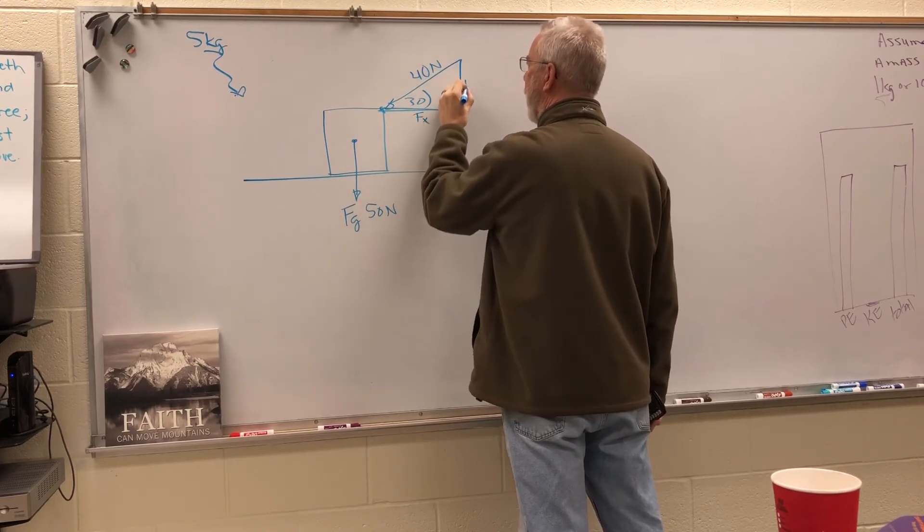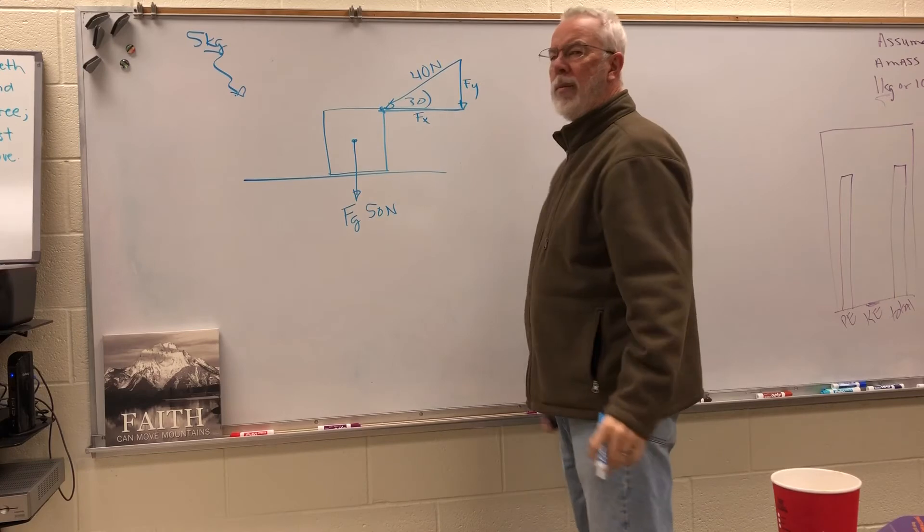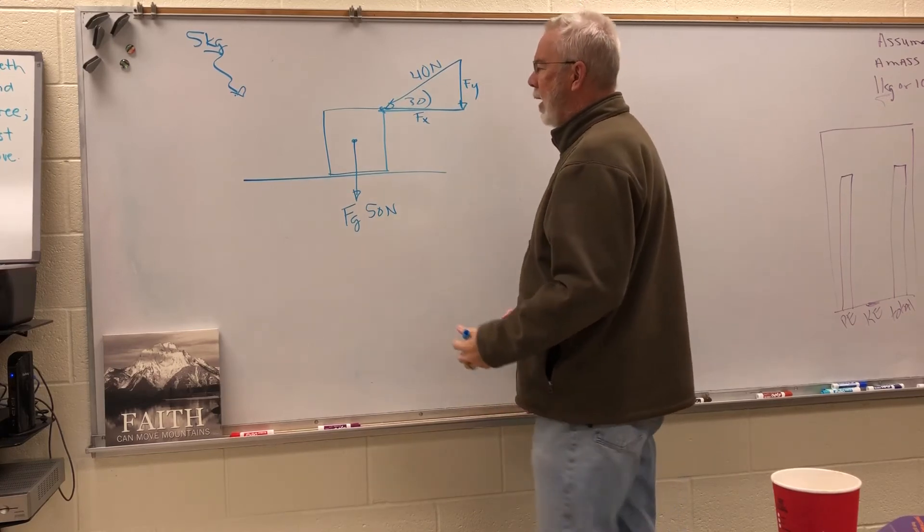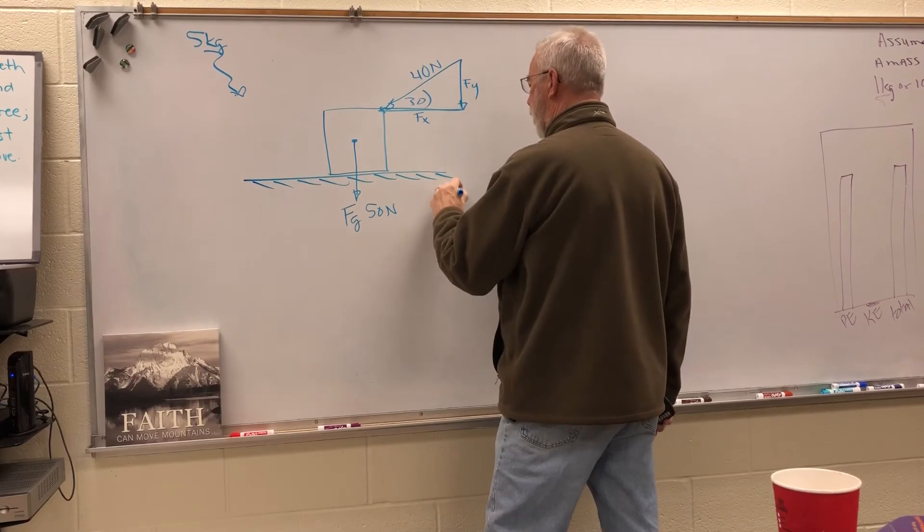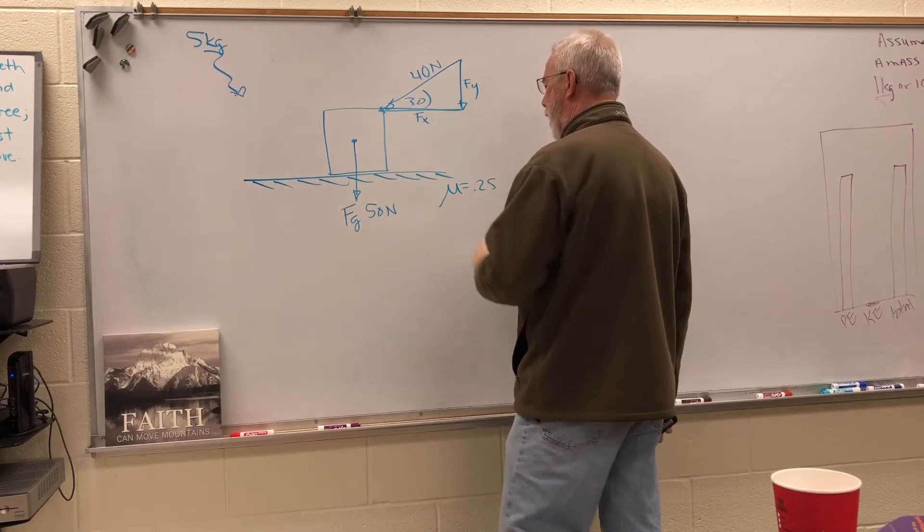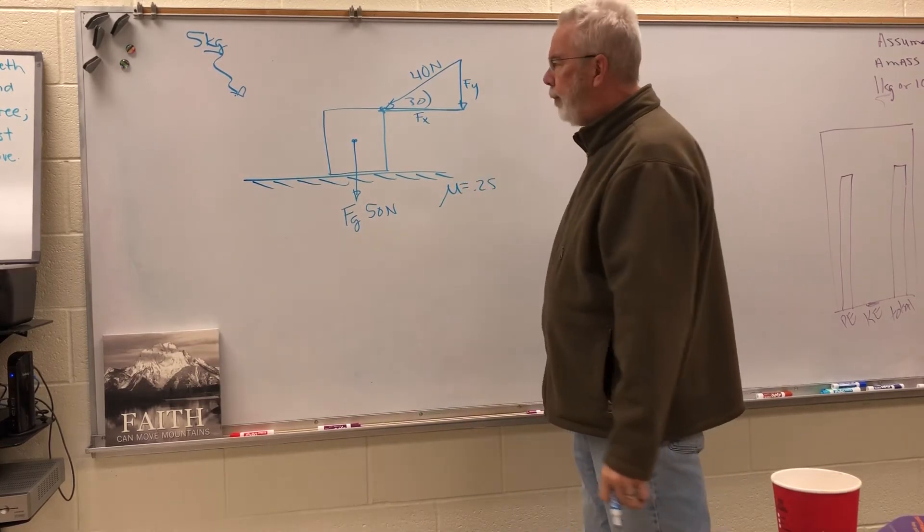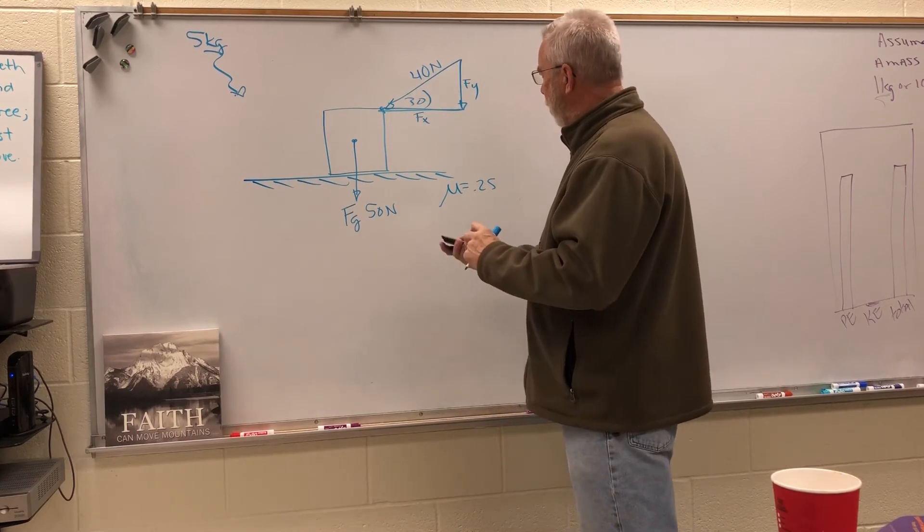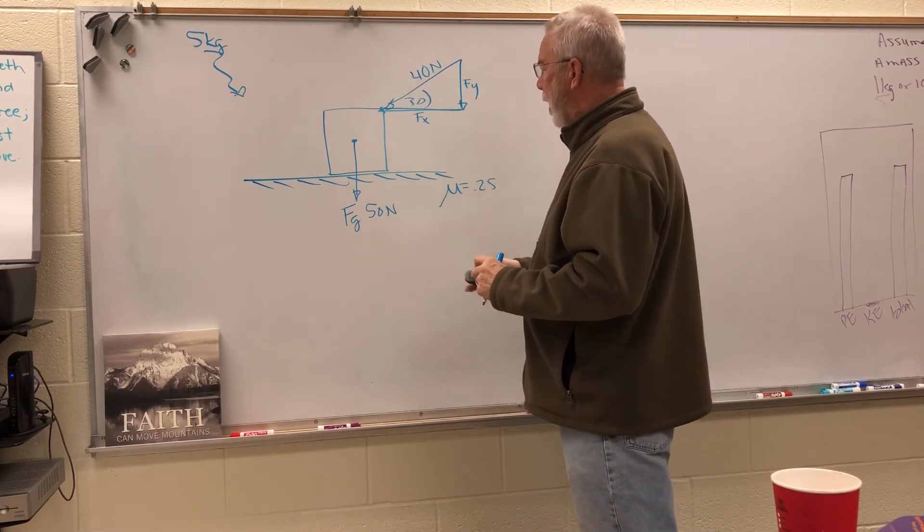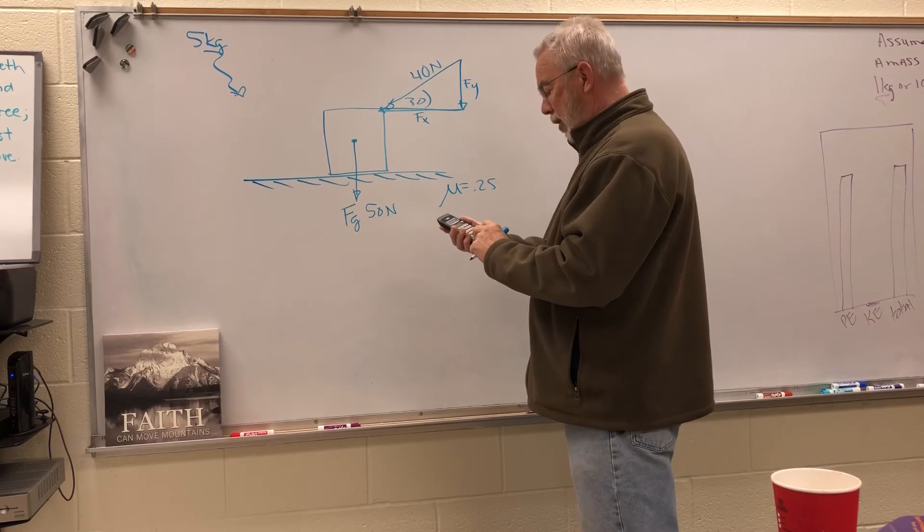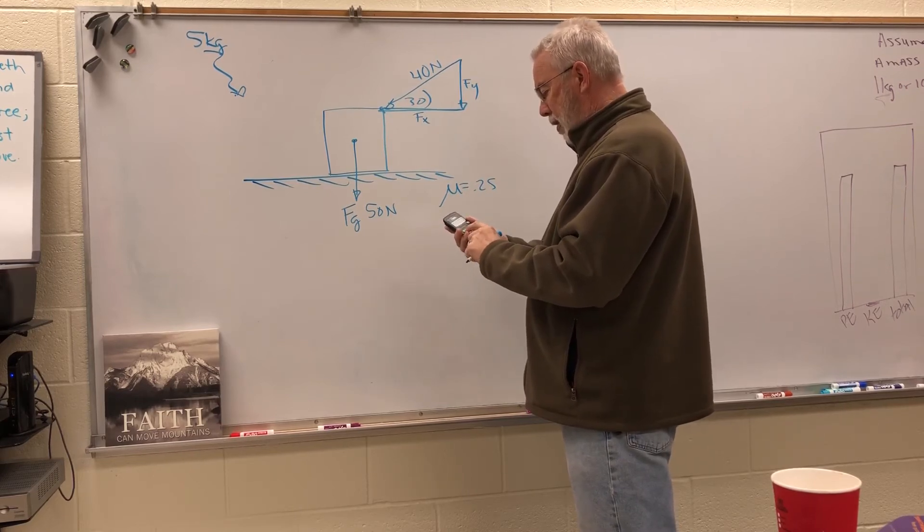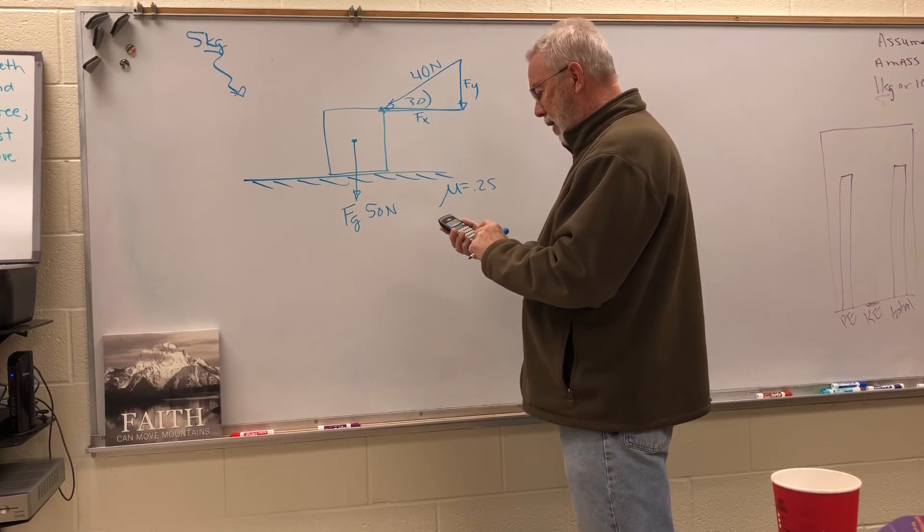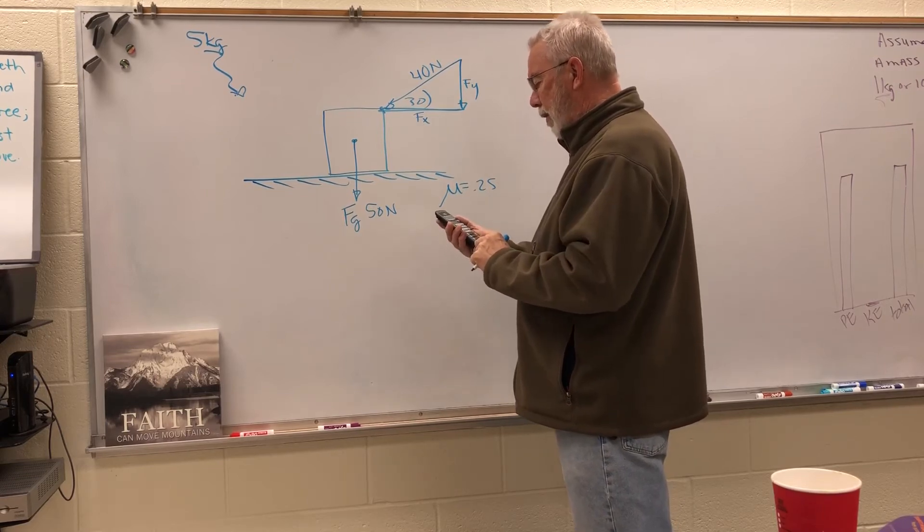Right away you're pushing down and to the left, so we're pushing down and we're pushing to the left. We have an F of x and we have an F of y that we must solve for. Let's put in some friction here and say that the coefficient of friction is 0.25.